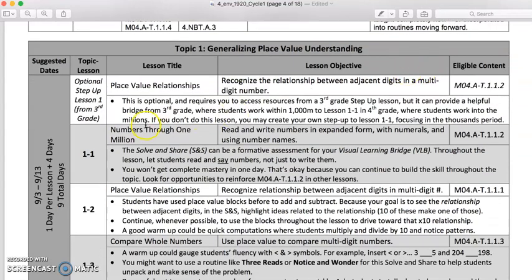As in the past, we list the topic lesson number, title, objective, and eligible content. That is straight from the book. You can get that from Envision. What I add to it are these bullets. The bullets are my intention to give you some information, some tips, some tricks, some ideas to help make the lesson even better. So maybe I give you advice about the solve and share or the visual learning bridge, or I tell you that you can reinforce the eligible content later, or I'll tell you what students have used in the past to create coherence.